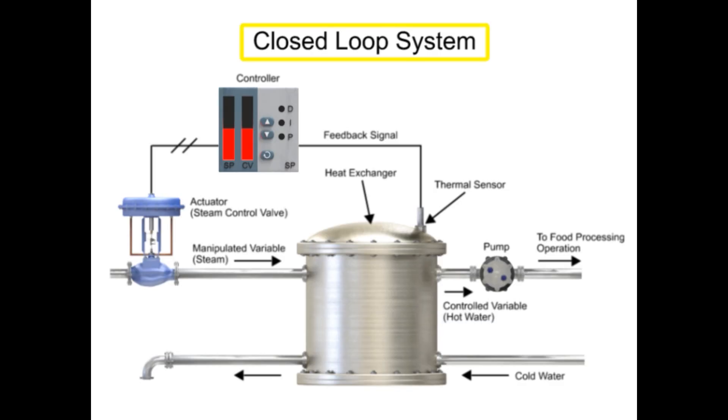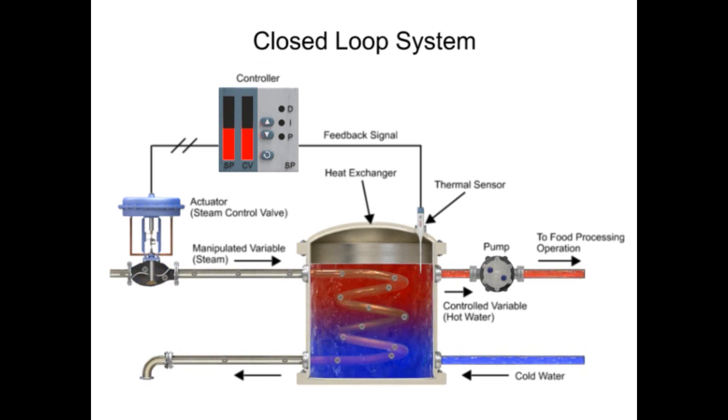The function of a closed-loop system is to monitor and automatically maintain a variable at a desired set point in a manufacturing process.